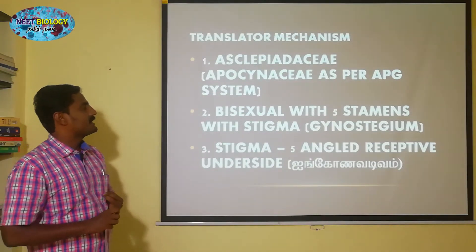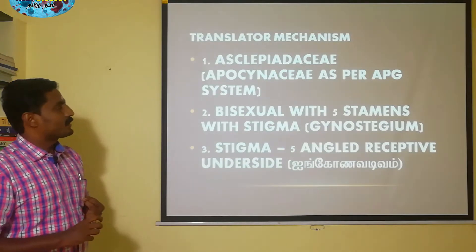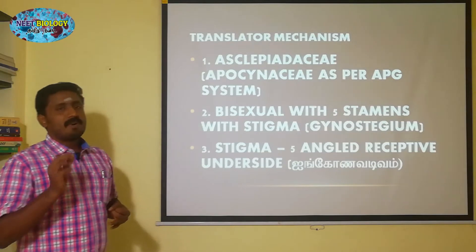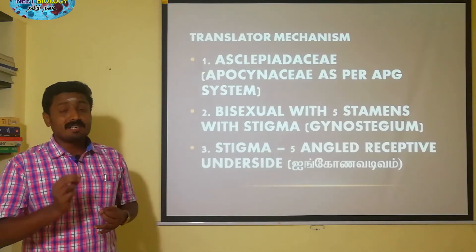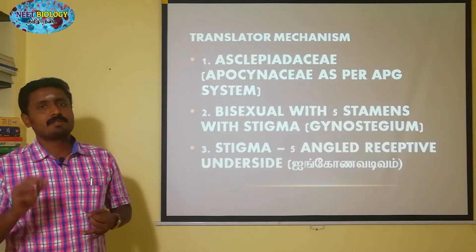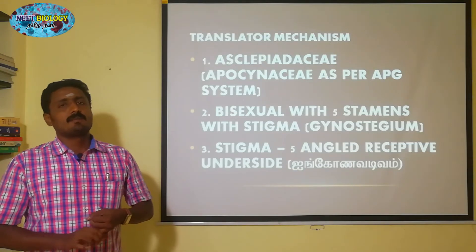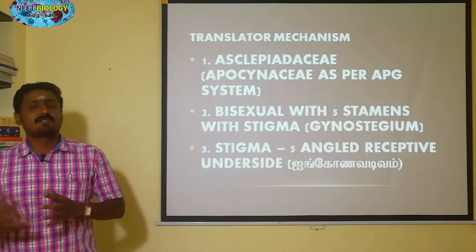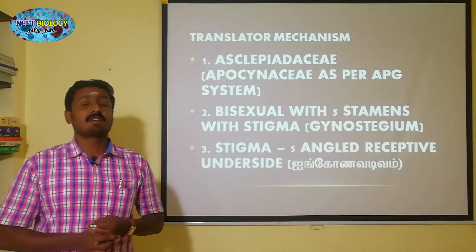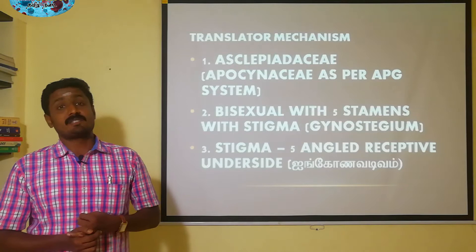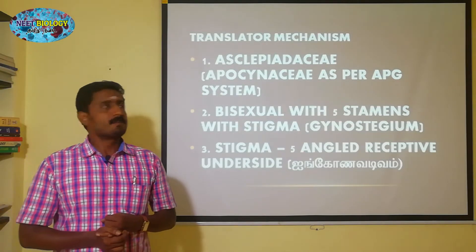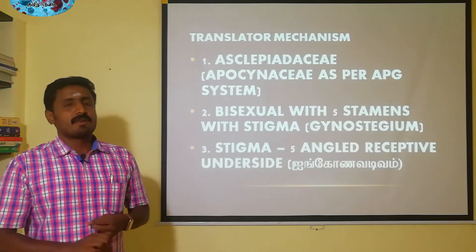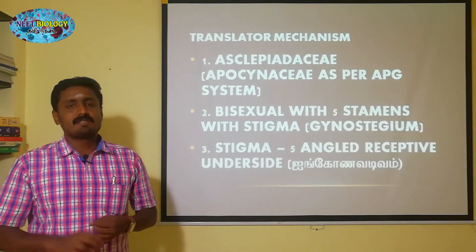The second point is that the flower is bisexual. The second key feature is gynostegium. Five stamens are united with the stigma. This is a very important point related to reproductive morphology from the 11th standard. Gynostegium is the second key point.